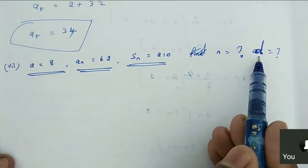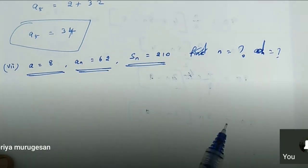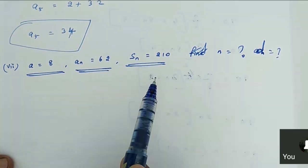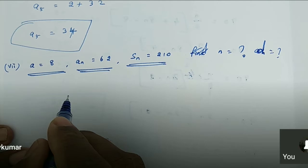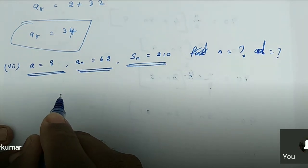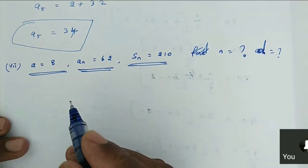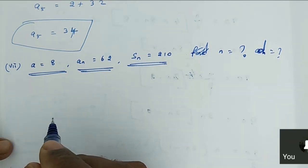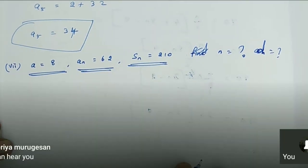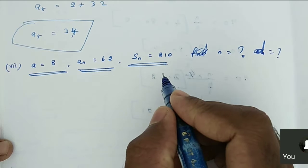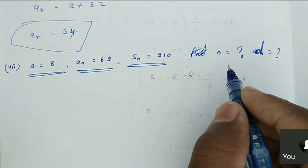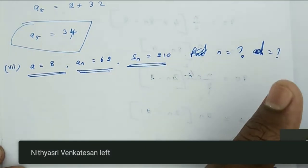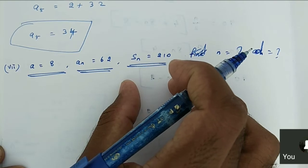What do you suppose to do? Find the N value and D value. What's the formula? What's the other formula here — the other term or the other sum? Chari, why are we using the sum of the term? I gave this as homework. You already completed it, right? So I want the answers. We want the value of N and D. Why are we supposed to use the S_N formula here?